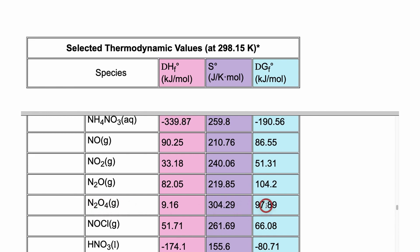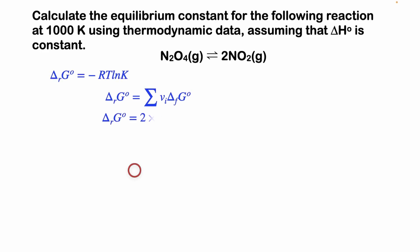So if we plug that into our equation right here, we have two times, because there's two of these, times the Gibbs energy of formation, 51.31 kilojoules per mole, minus the reactants. And there's only one here. So this is like one times 97.89 kilojoules per mole, which gives us a Gibbs energy of reaction, standard Gibbs energy of reaction of positive 4.73 kilojoules per mole. Cool beans.